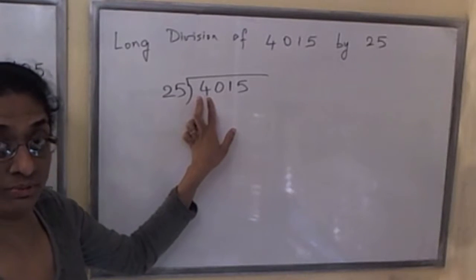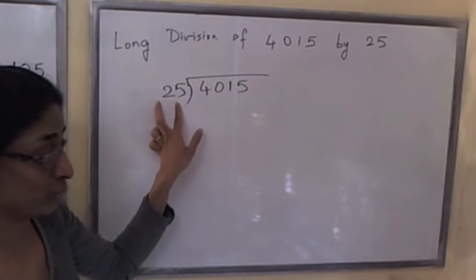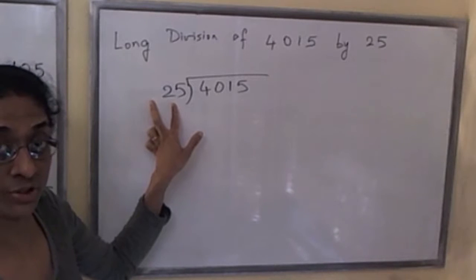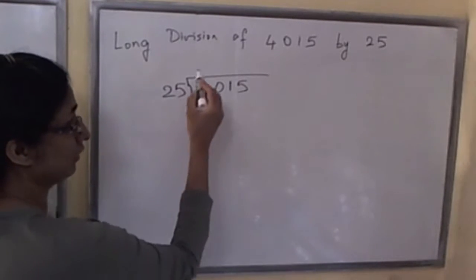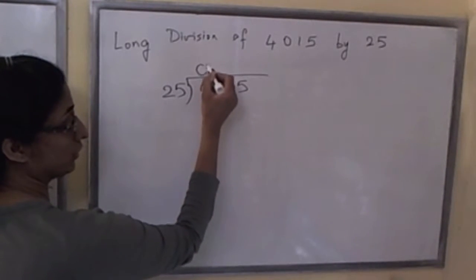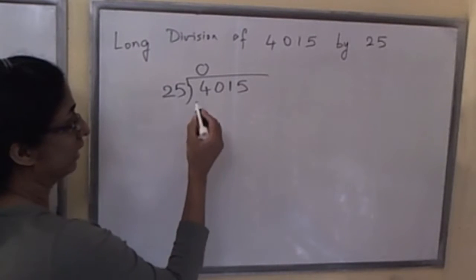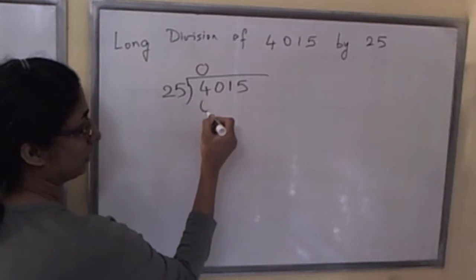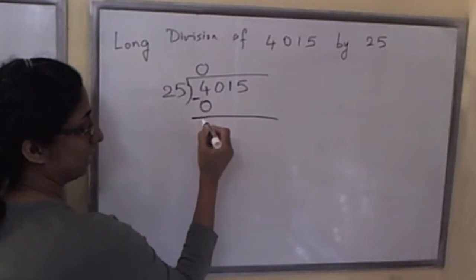We look at only the first digit, 4, and we ask ourselves: let's do division with remainder of 4 by 25. How many copies of 25 in 4? That would be 0. We put 0 in the same column as 4, and 25 times 0 is 0. We do the subtraction and we get 4 minus 0 is 4.